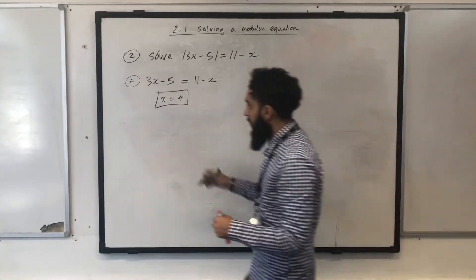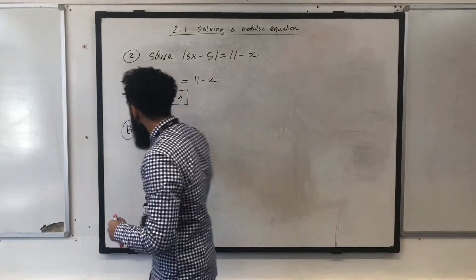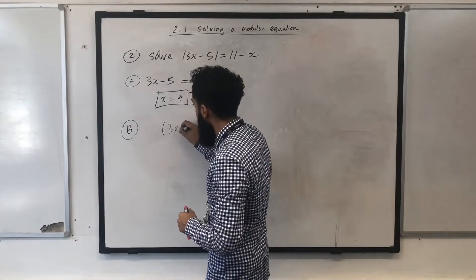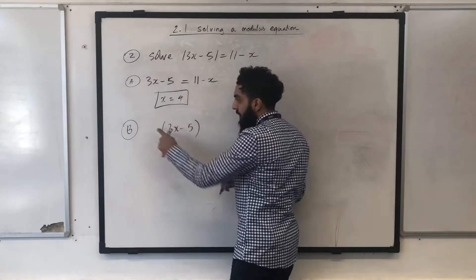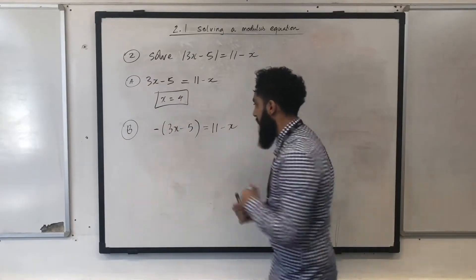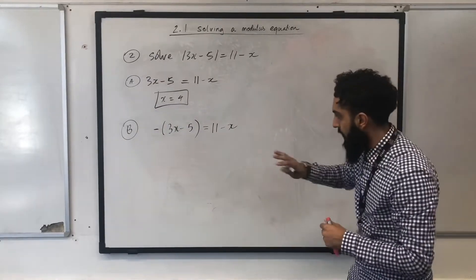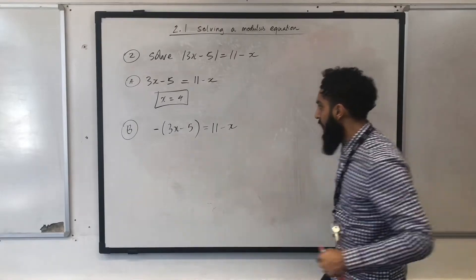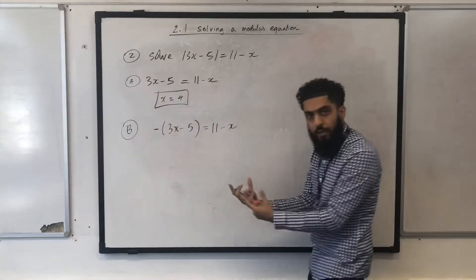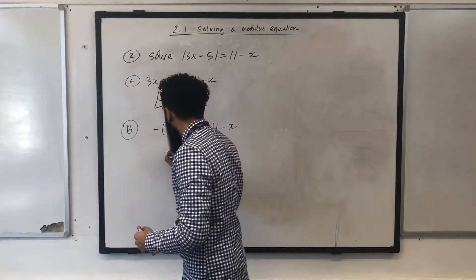Then you form the second equation, equation B. This time you've got 3x minus 5 in brackets. And you stick a minus in front. Equal to 11 minus x. No problem guys, we've got this. You solve this equation. And then, after solving this beautiful equation, you get x equal minus 3.